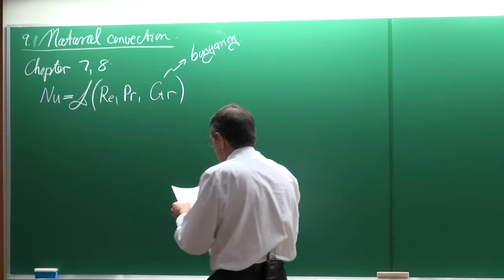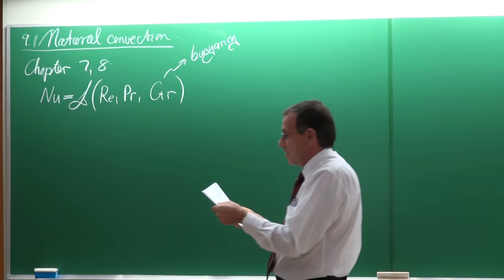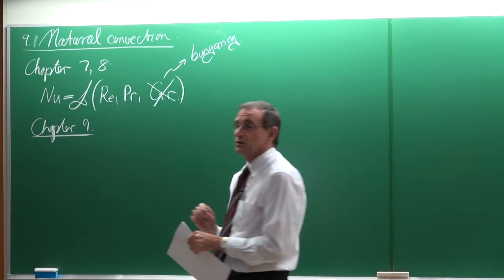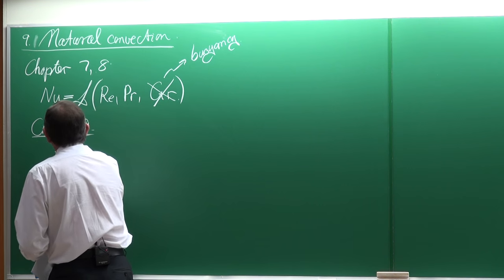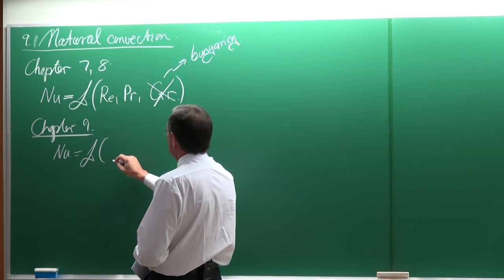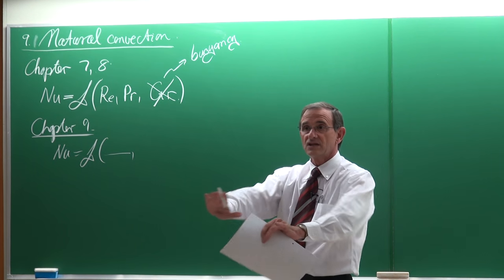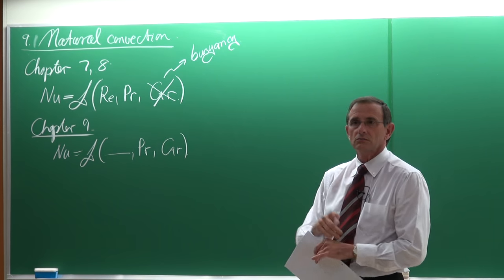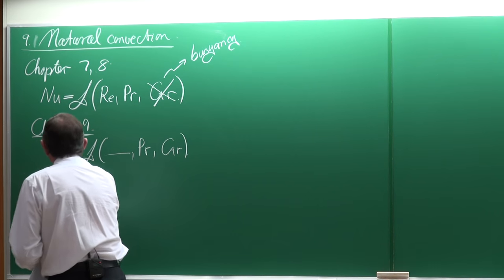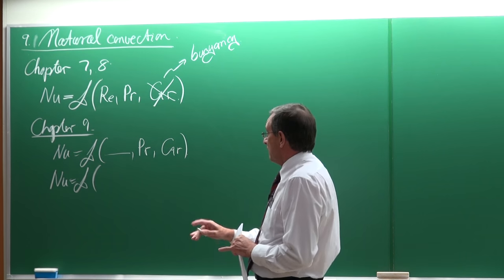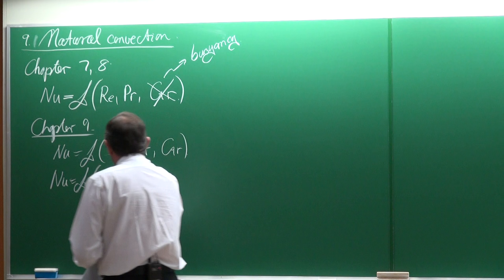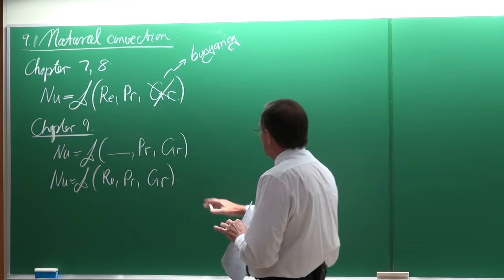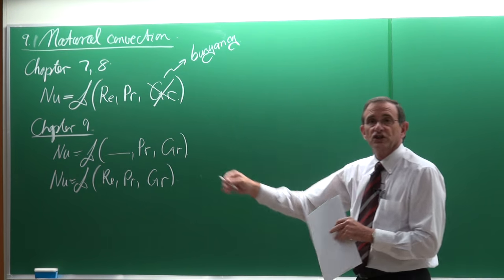The Grashoff number represents the effect of buoyancy, and that is specifically what we're going to discuss today in chapter nine. Previously, that term was not taken into consideration. In chapter nine, we'll first consider it without the Reynolds number — setting Reynolds to zero — with just Prandtl and Grashoff. But we'll also see problems where the Nusselt number is a function of all three: Reynolds, Prandtl, and Grashoff together. This is about the combination of forced and natural convection.